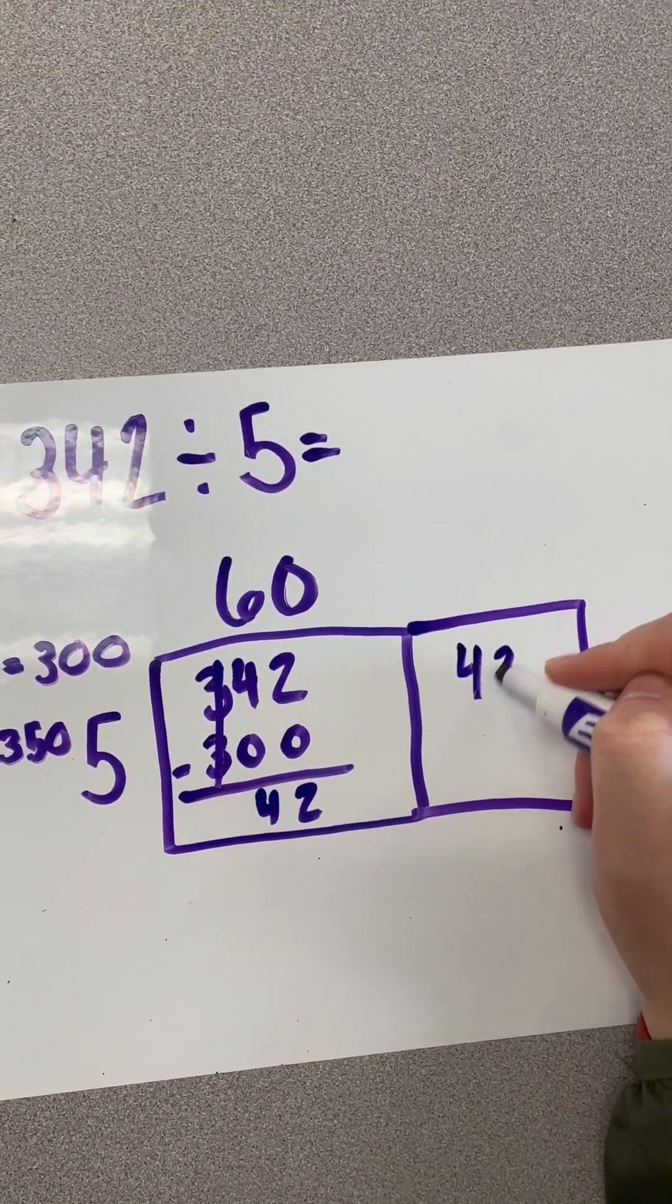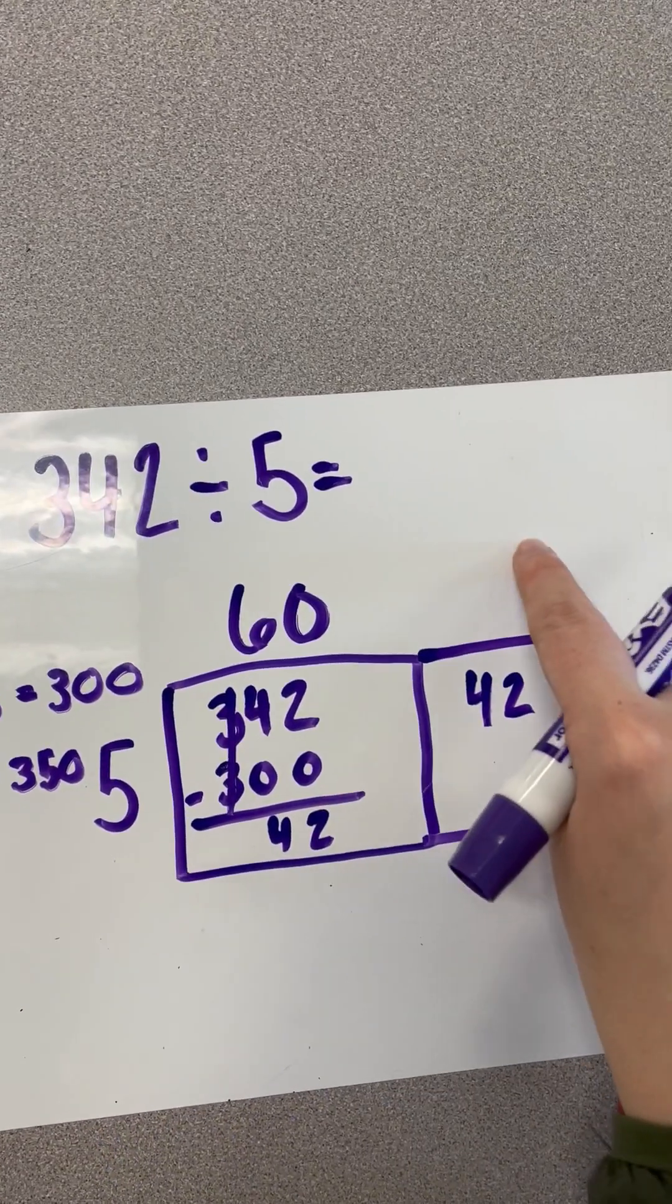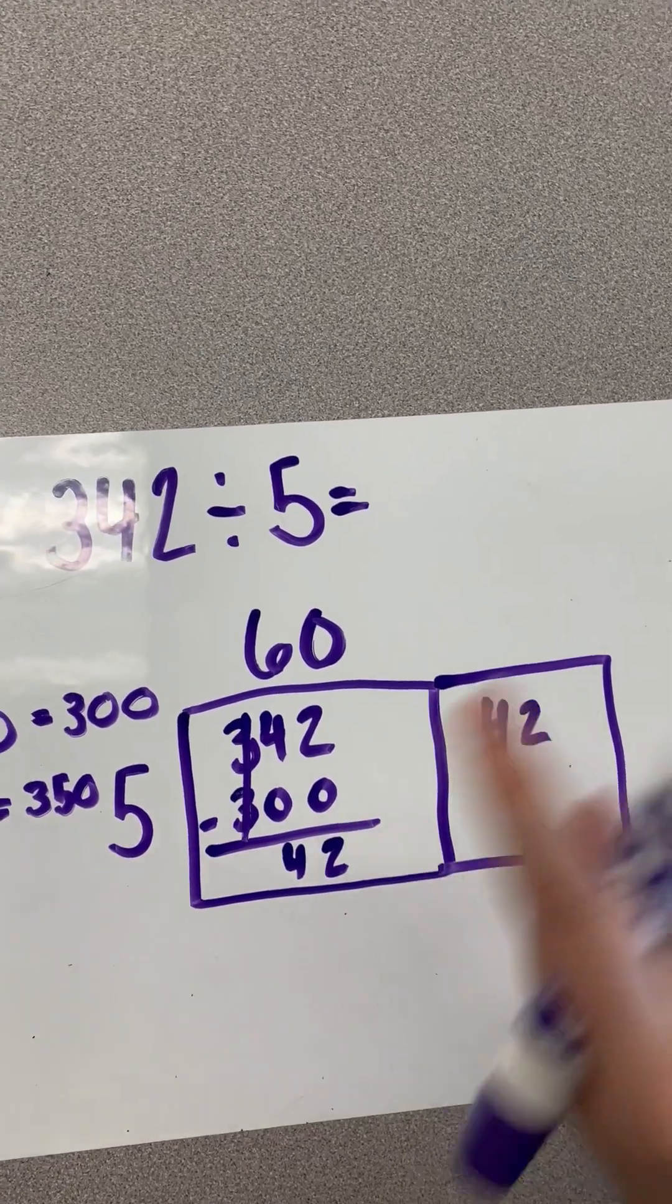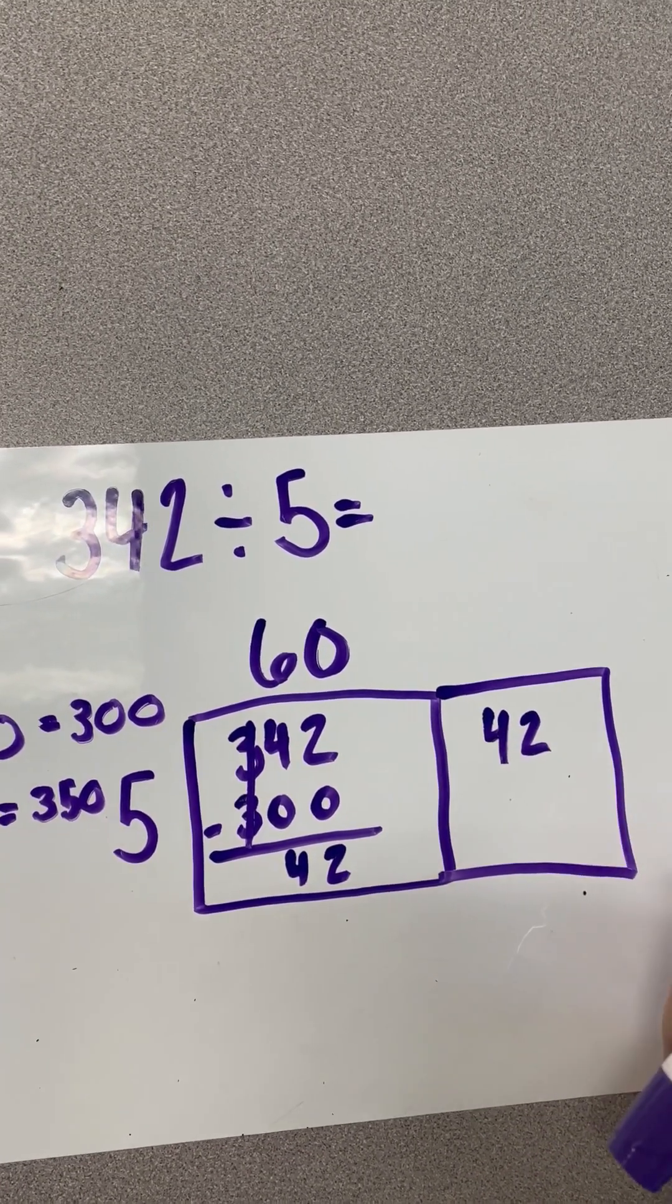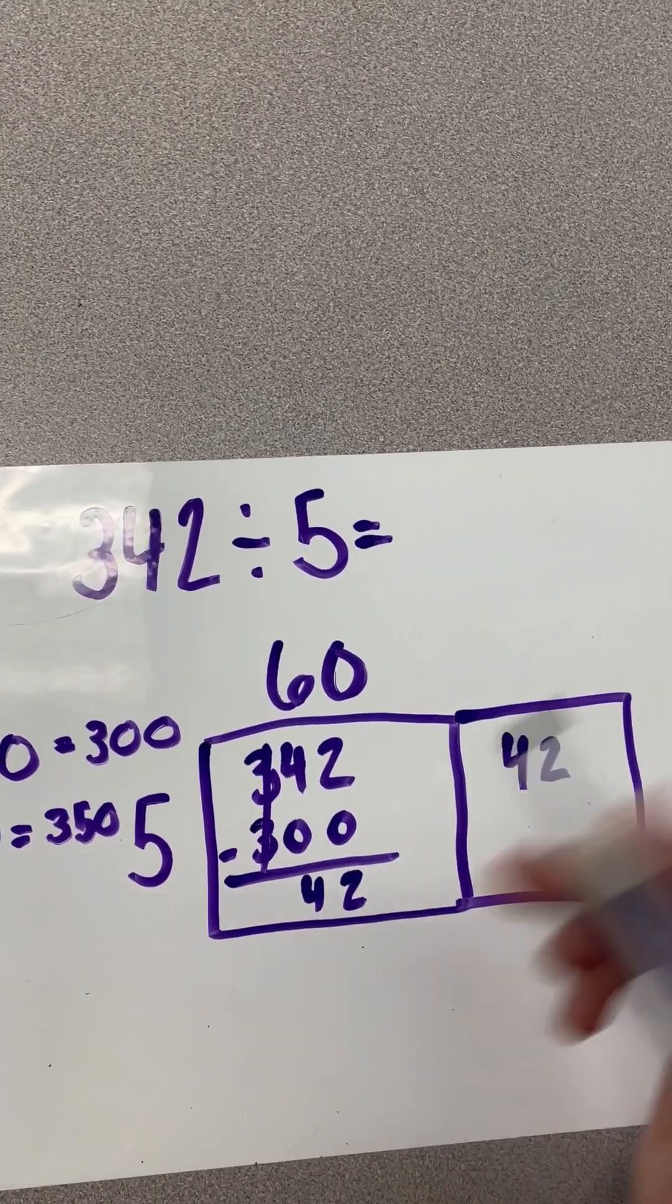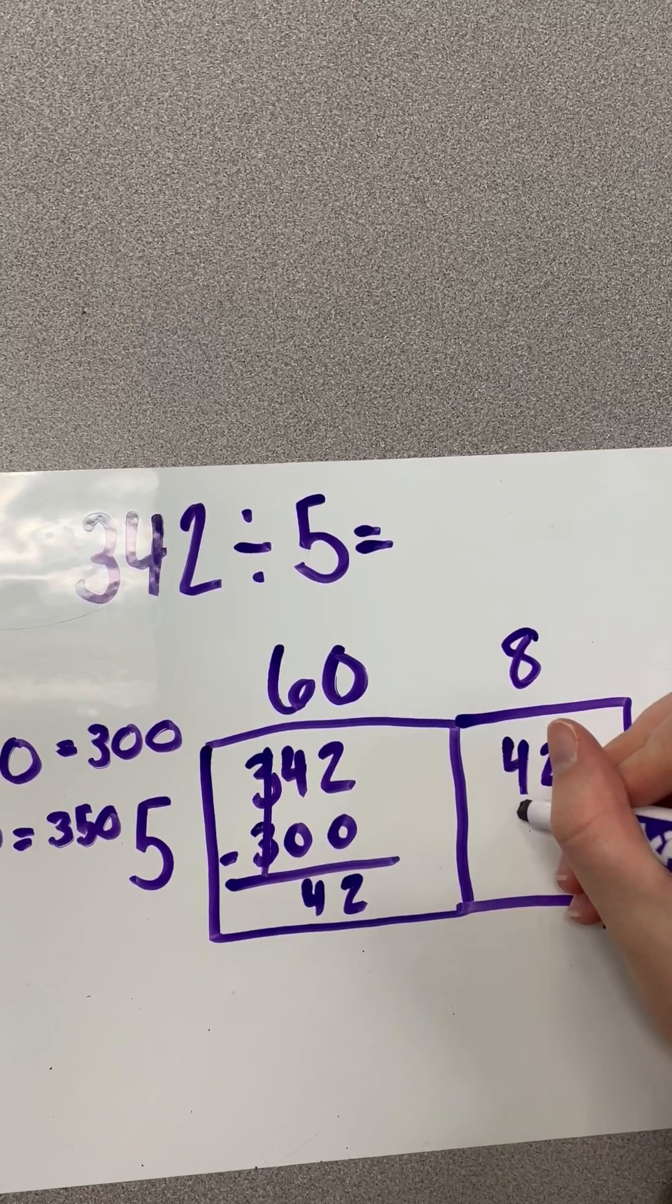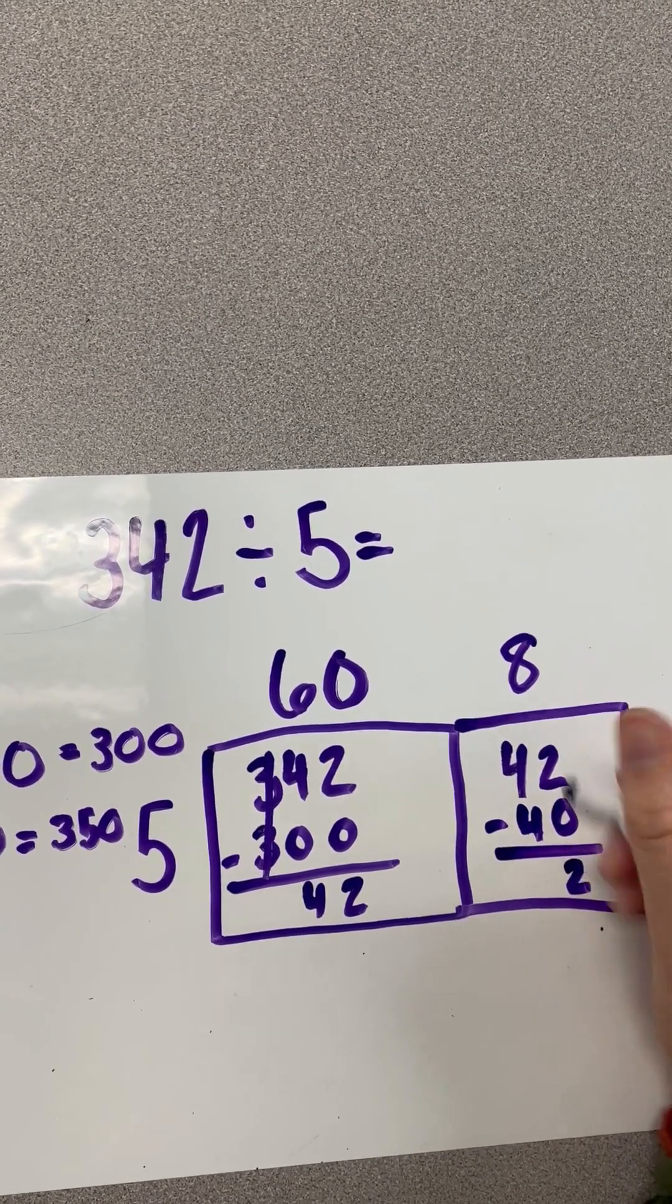So, I'm going to move the 42 over and then I have to ask myself, what times 5 will get me close to 42? Because, again, we know that nothing times 5 will get me exactly 42. Well, I know that 5 times 8 is 40, so 8 times 5, put 40, and we're going to subtract that out. And we're going to get 2 left over.